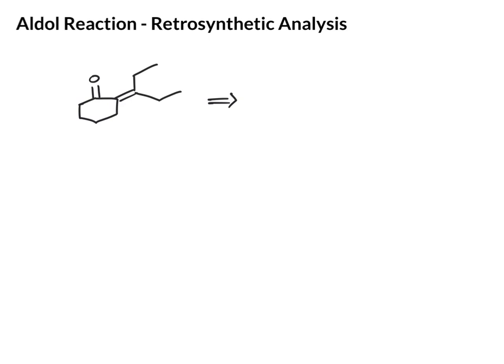So if you're given a product like this where we have an alpha-beta unsaturation, remember that that would have come from the beta-hydroxy ketone. So your first step is to convert this into the beta-hydroxy ketone.